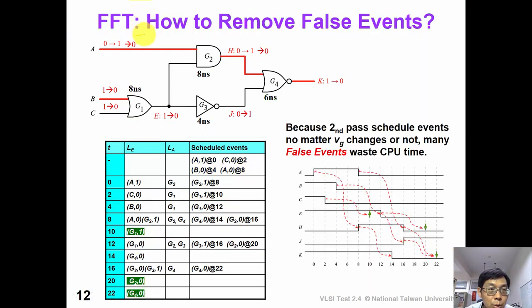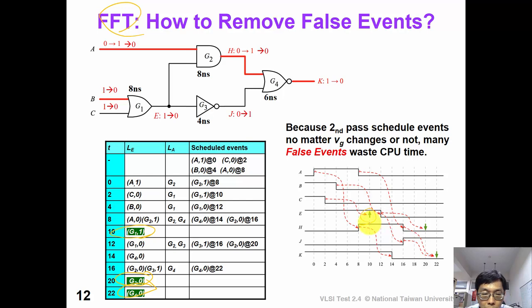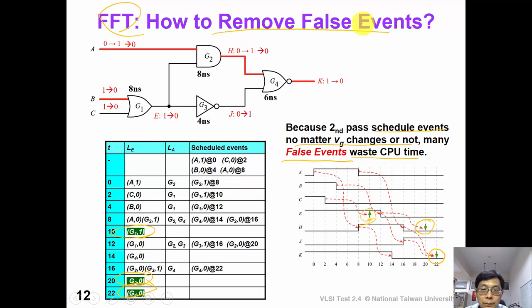Now we have an FFT for you. If we look at the simulation output carefully, we would see that there are actually three redundant events. In the timing chart, we can see that at time 10, G1 output is actually 1 already. So this event is a false event, which is redundant. Similarly, at time 20 and 22, we also have false events. So there are many false events which waste our CPU time. Can you invent a new algorithm that can remove those false events? This is a good FFT for you to think about.